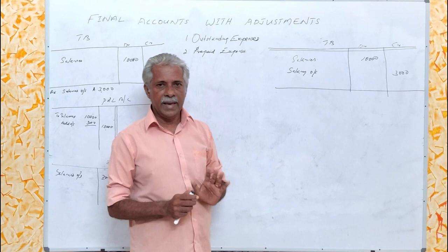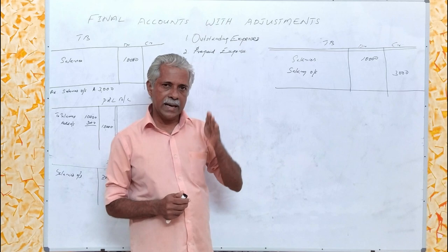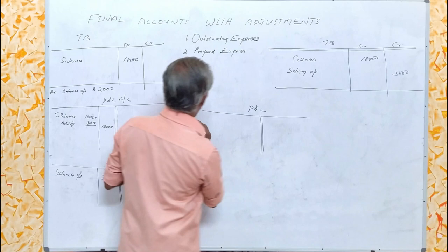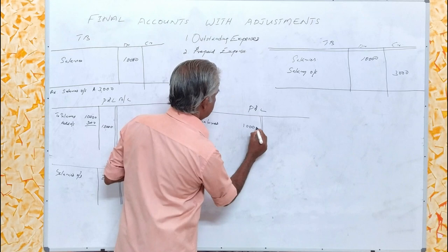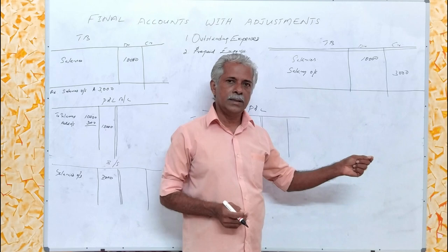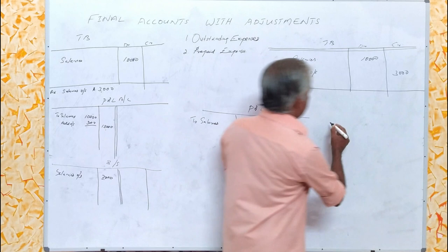...is already added to the concerned expense, namely salaries. That means the salary of rupees 10,000 includes this 3,000 also. Hence no further addition is required in the profit and loss account. It can be directly taken in the profit and loss account as salaries rupees 10,000, because this salary already includes the outstanding. Since salary outstanding appeared in the trial balance, it can be directly transferred to the profit and loss account with no further adjustment needed.